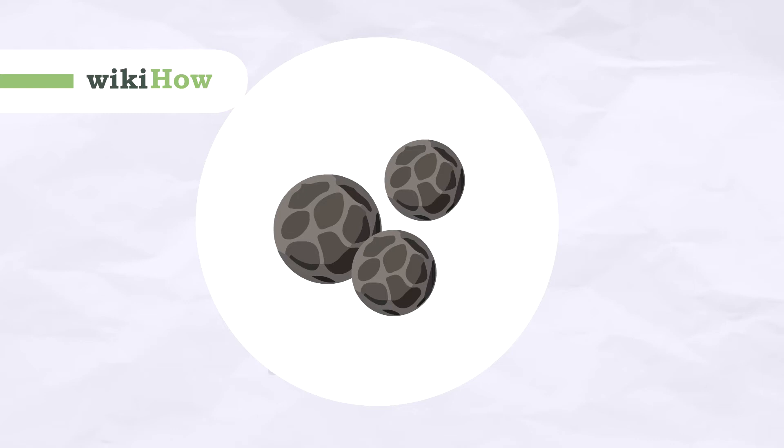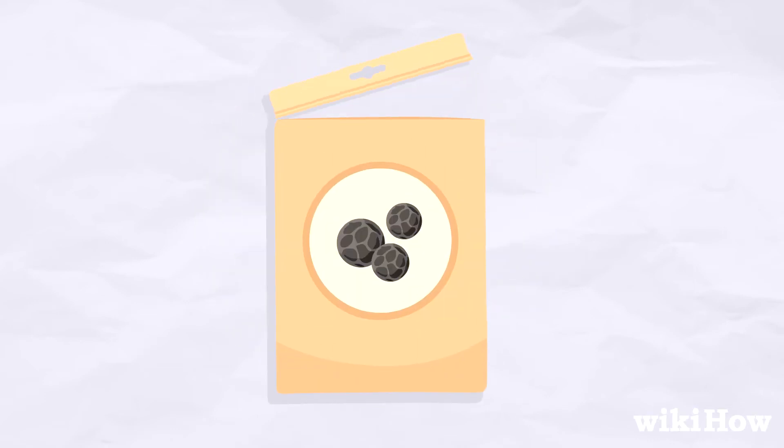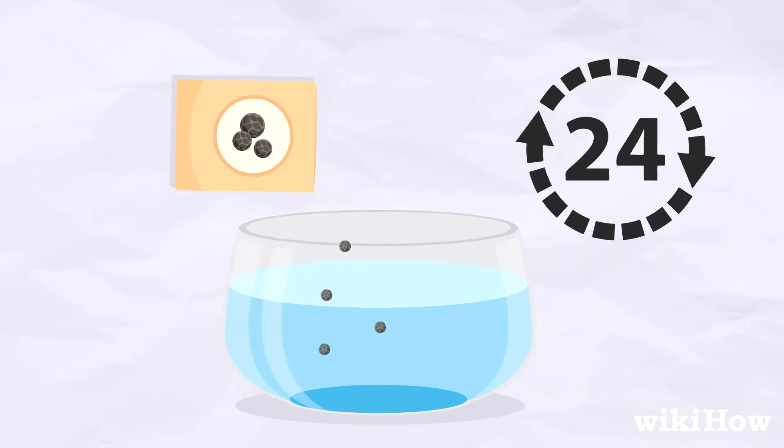To grow black pepper, first purchase some black pepper seeds and soak them in water for 24 hours.